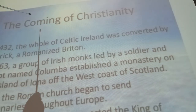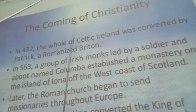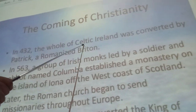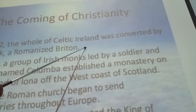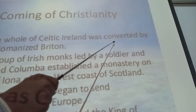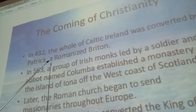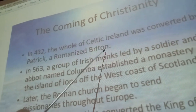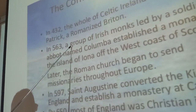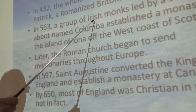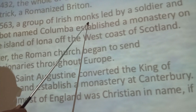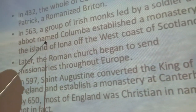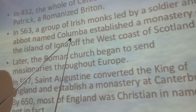Christianity: in 432, all of Celtic Ireland was converted by Patrick, a Romanized Briton. In 563, a group of Irish monks led by an abbot named Columba established a monastery on the island off the coast of Scotland.